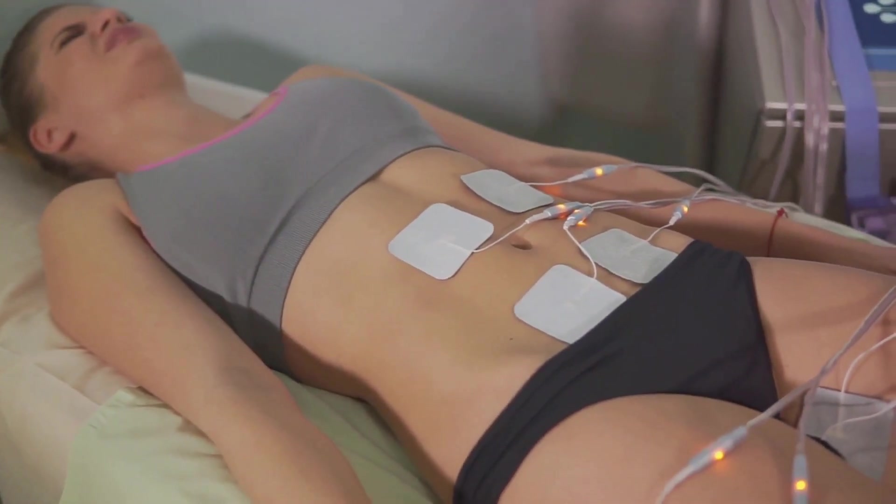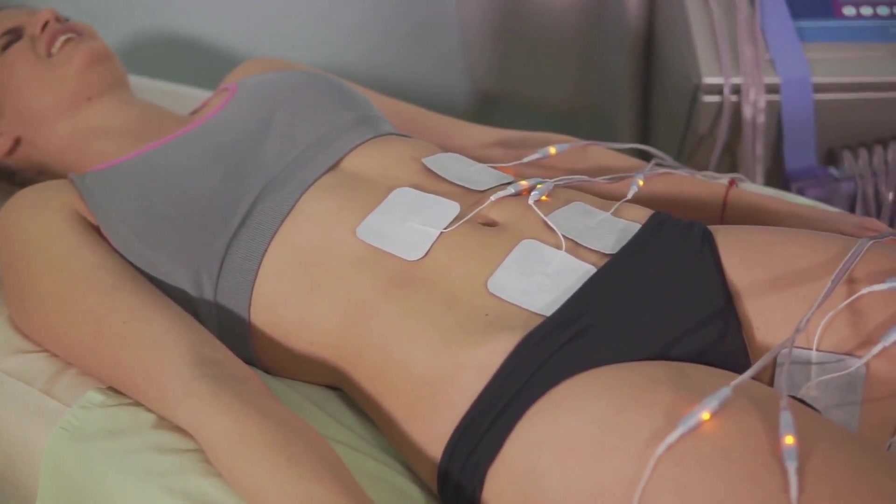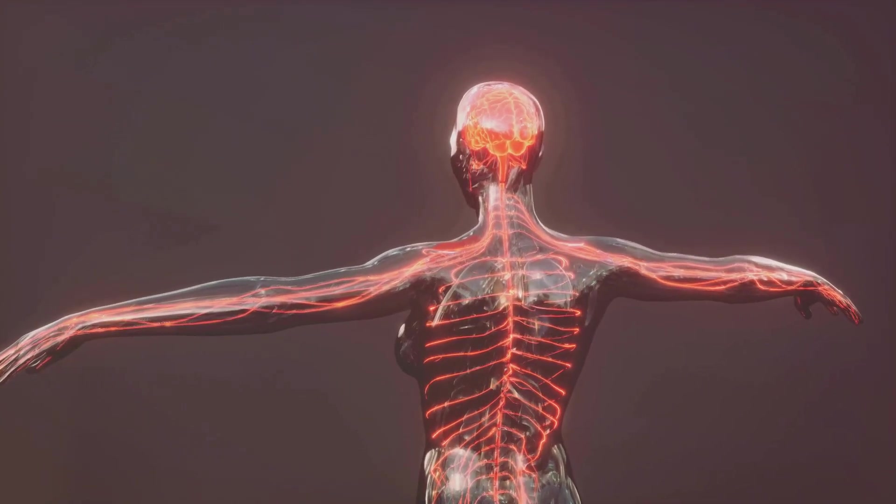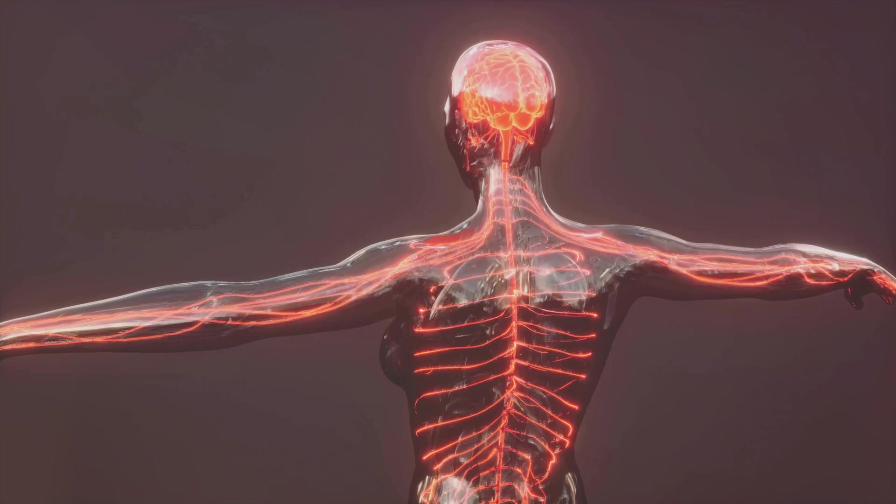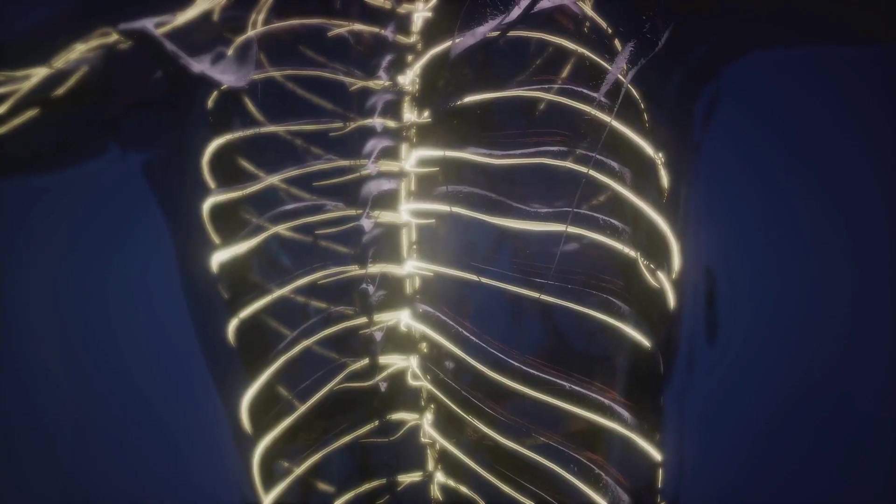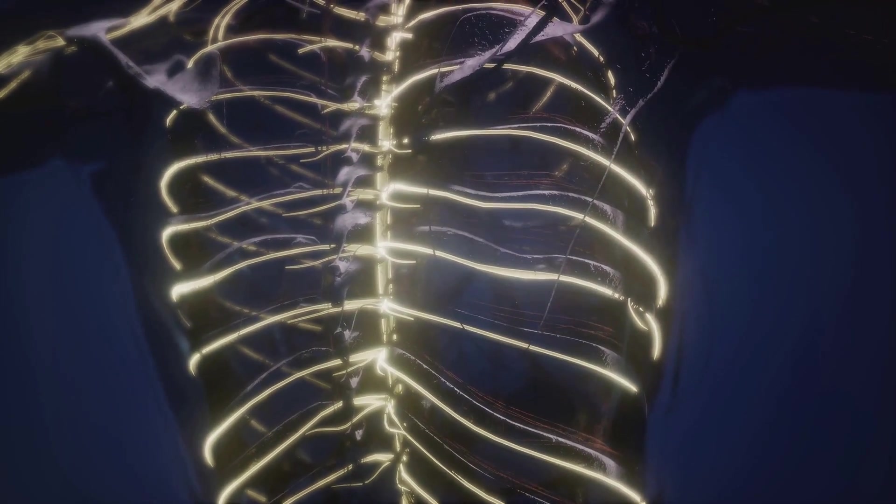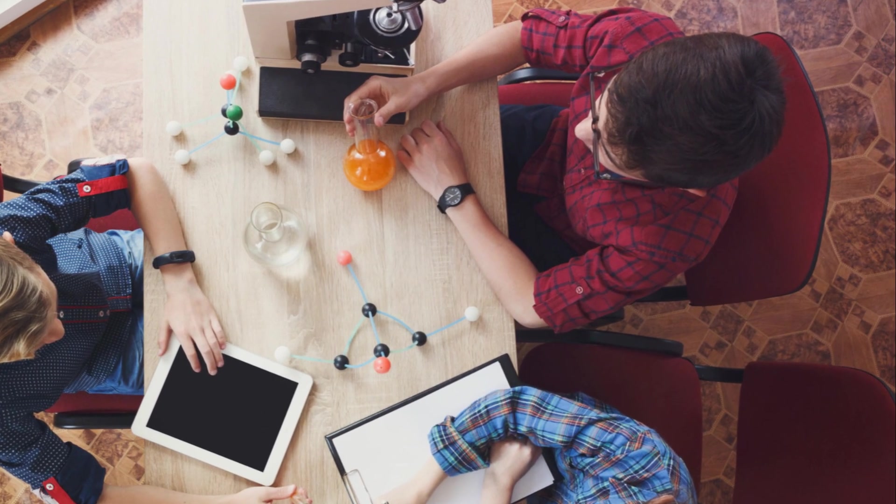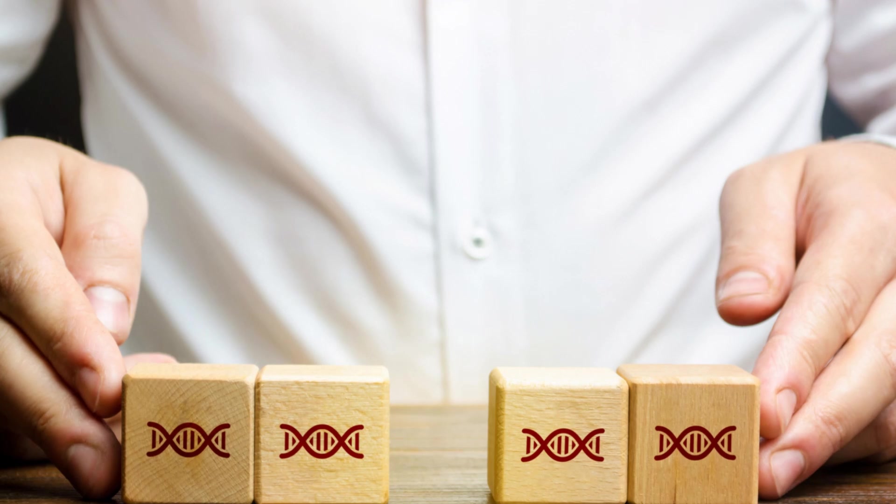Perhaps the most astounding potential benefit, though, is the prospect of limb regeneration. Just as a starfish can regrow a lost arm, understanding our electrome could unlock the secrets to human limb regeneration. It sounds fantastical, yet the science behind it is very real. By mapping our body's electrical network, we could learn to control and manipulate it in such a way that encourages the growth of new cells and tissues, potentially even entire limbs.